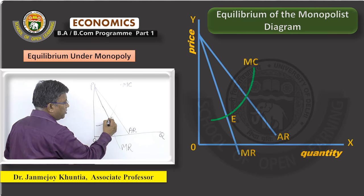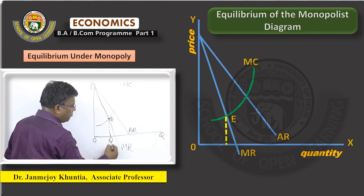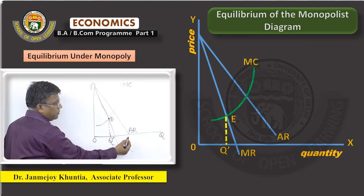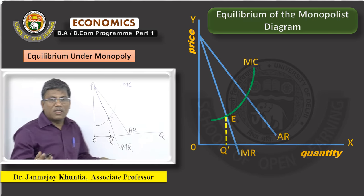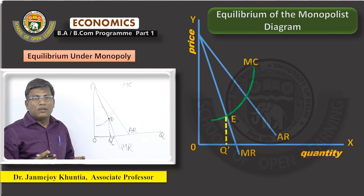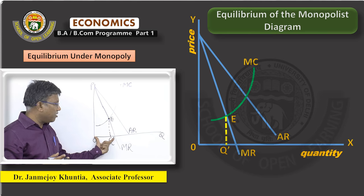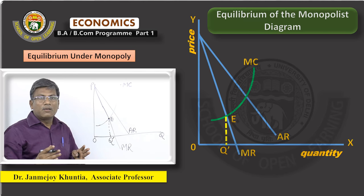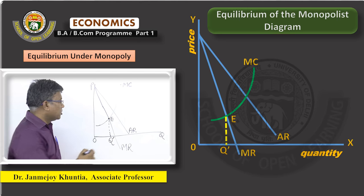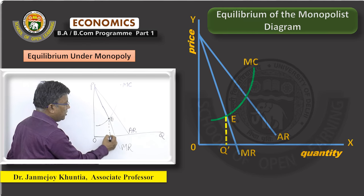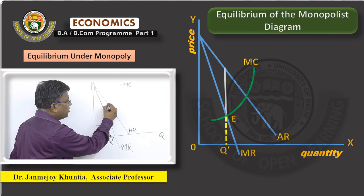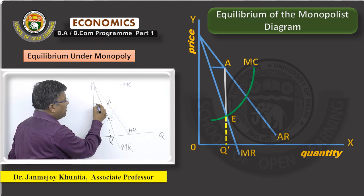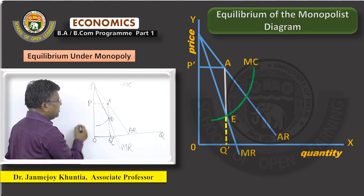At the Point of Equilibrium, draw a Perpendicular to get the Rate of Output to be produced — call it Q*. As price is nothing but Average Revenue, the corresponding price for this equilibrium level of output is determined on the Average Revenue Curve. Extend this perpendicular from E towards the Average Revenue Curve so that it meets at Point A. At Point A, the equilibrium price of the monopolist is called P*.